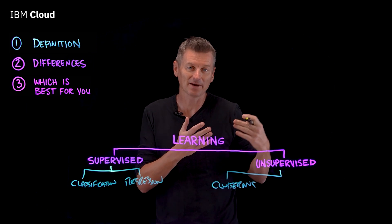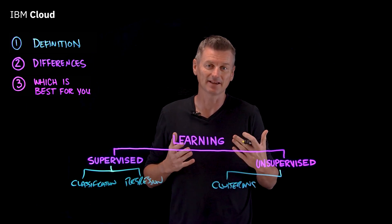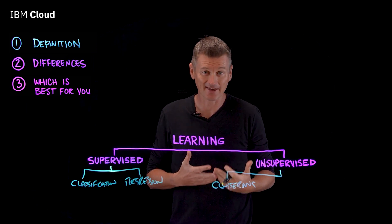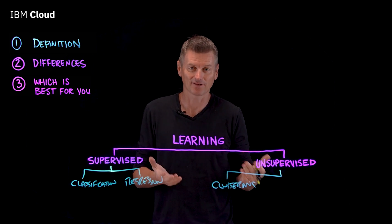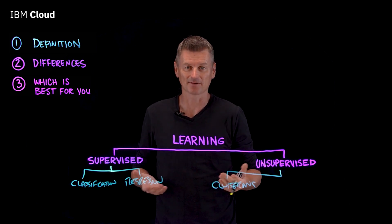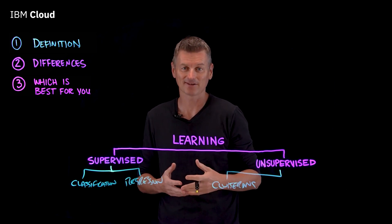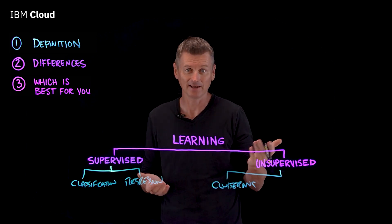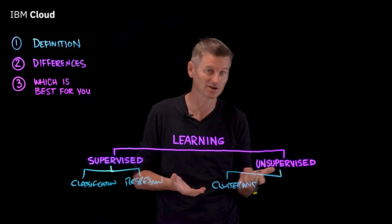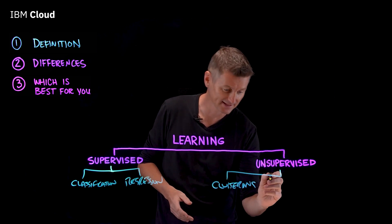Clustering is where the algorithm groups similar examples together. A common application of clustering is customer segmentation, where businesses might group customers together based on similarities like age, location, or spending habits.